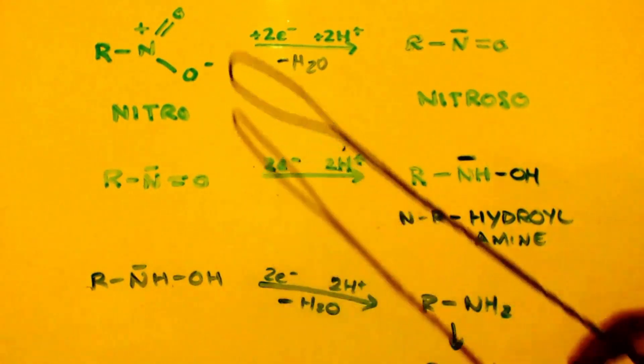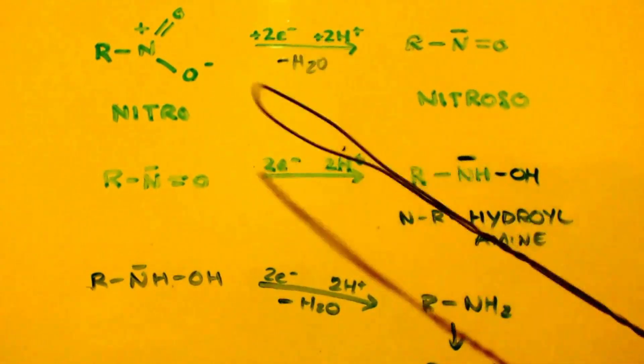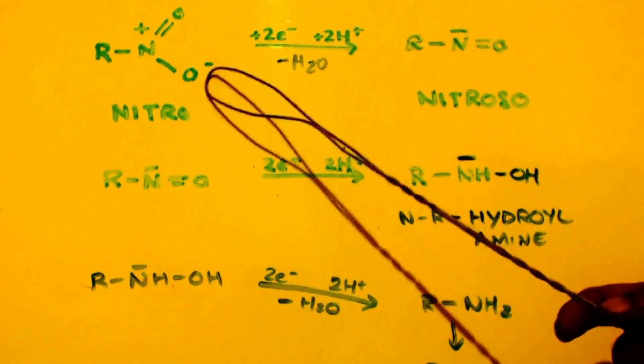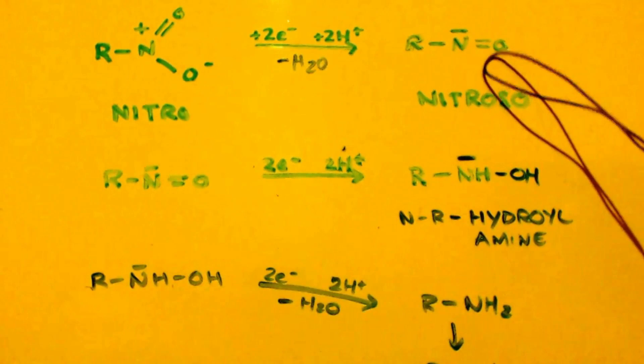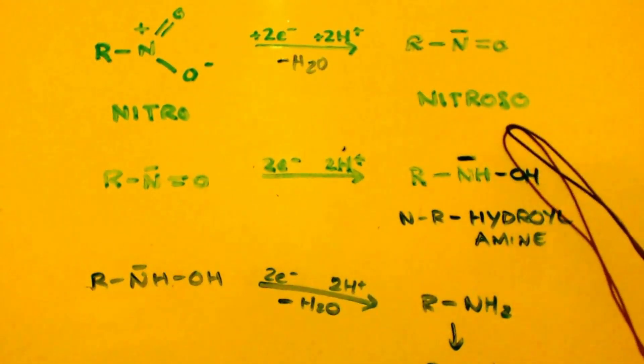So anyways, you got your nitro group. The R would be a methyl group in our case. And you're going to add two electrons and two protons and remove a water. You're going to add two protons here and this is going to come off. And you wind up with this. Now instead of it being positive, it's negative. And that's called a nitroso group.